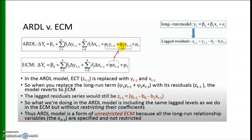The lagged residual series z_{t-1} equals y_{t-1} minus beta_0 minus beta_1 times x_{t-1}. What we do in the ARDL model is include the same lagged levels as in ECM but without restricting their coefficients. Thus, the ARDL model is a form of unrestricted ECM because all long-run relationship variables x_{it-1} are specified and not restricted.